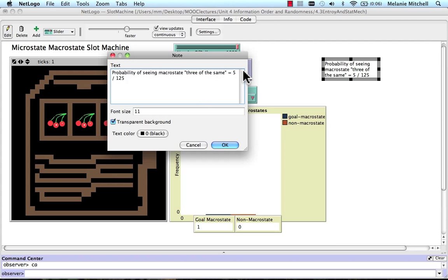Put that all on one line. Five divided by 125, which is equal to .04. So that's the probability, if we pull the lever once, that we'll see three of the same. Four percent.